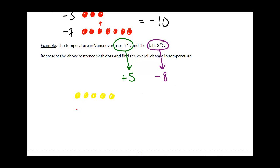And minus eight would be one, two, three, four, five, six, seven, eight of the negatives.